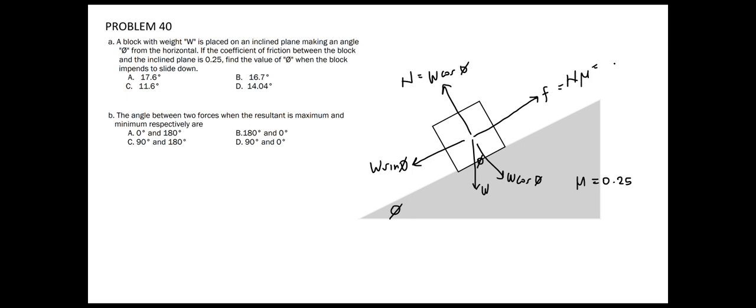Knowing that N is equal to W cosine of phi and the coefficient of friction equal to 0.25, we can solve for the angle phi by taking summation of force parallel to the surface equal to 0, taking upward forces to be positive. So we have an upward force of W cosine of phi times 0.25 minus the downward force W sine of phi equal to 0.